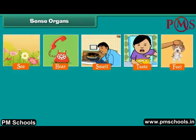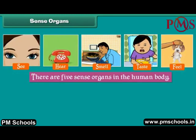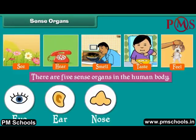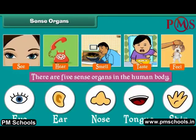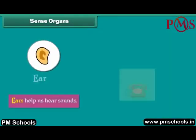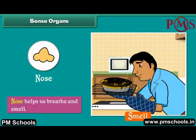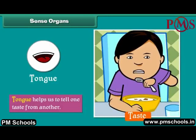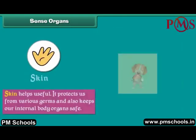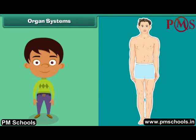The organs that help us to see, hear, smell, taste and feel are called sense organs. There are five sense organs in the human body: eyes, ears, nose, tongue and skin. Eyes help us to see things around us. Ears help us to hear sounds. Nose helps us to breathe and smell. Tongue helps us to tell one taste from another. Skin protects us from various germs and keeps our internal body organs safe.